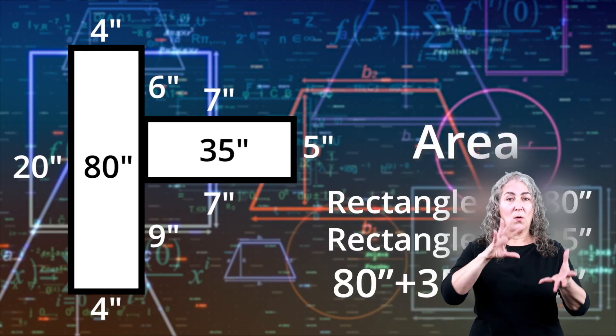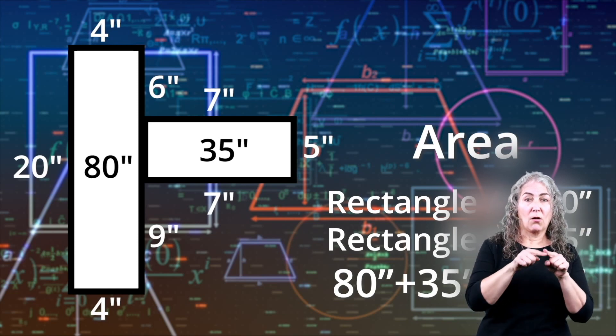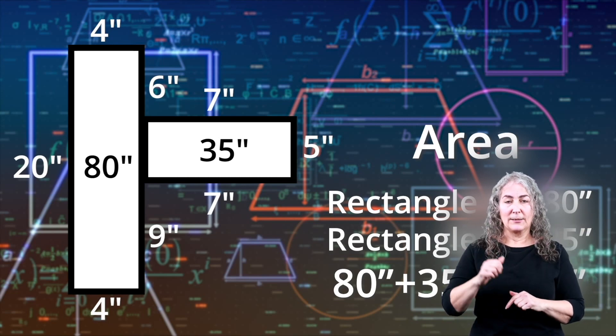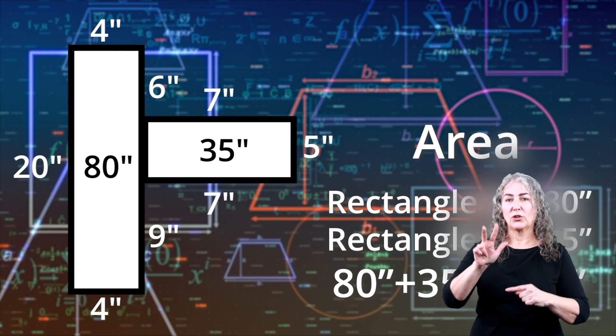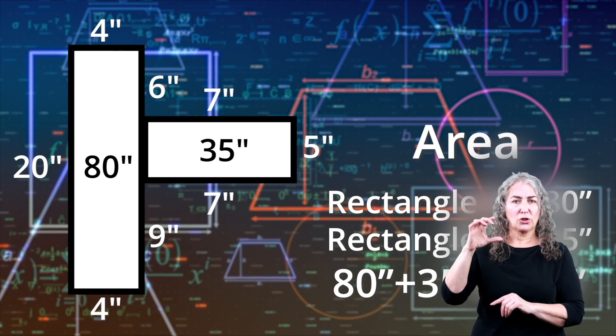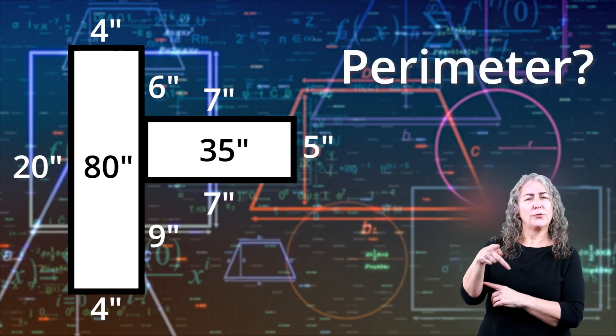Now, if we add together rectangle A and rectangle B, the total area is 80 plus 35 or 115 square inches. But what about the perimeter?